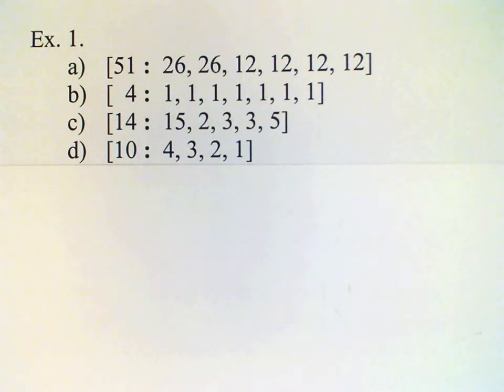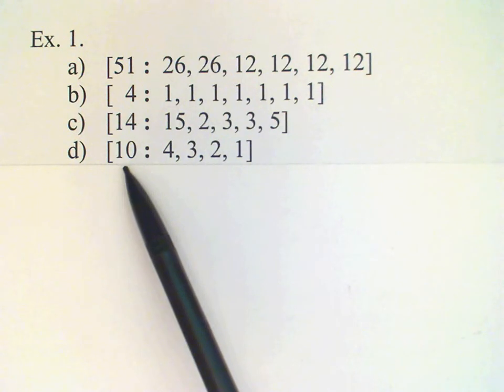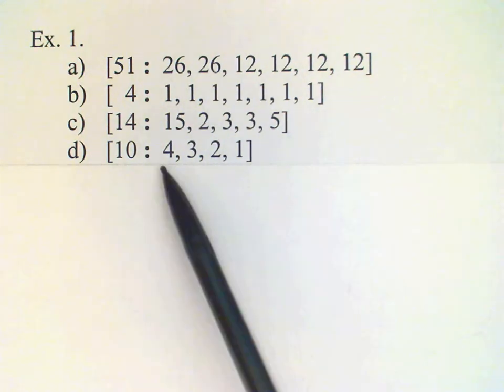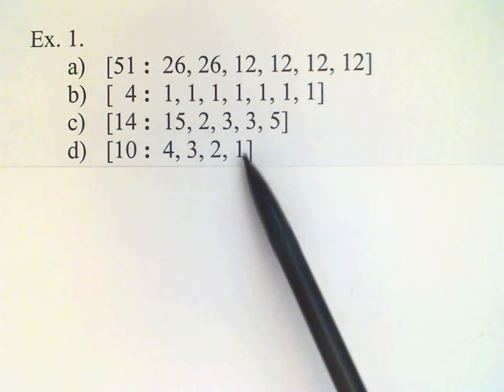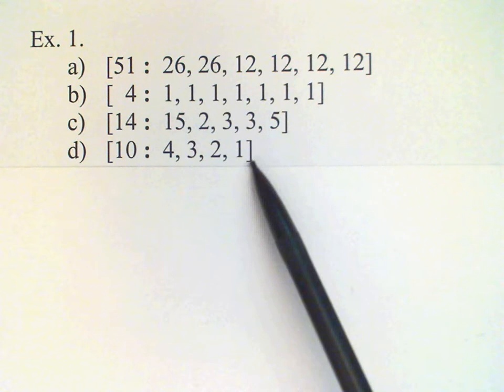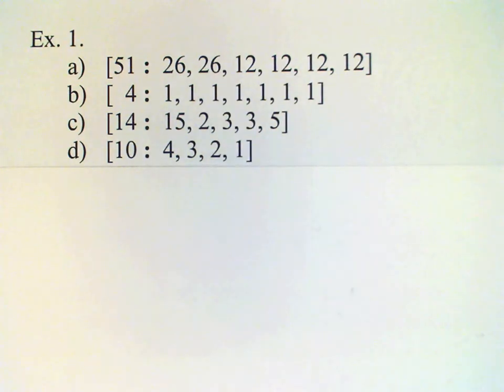Now it might seem in this example [10: 4, 3, 2, 1] that the voters have unequal power, but in fact, if you look at the quota, you see that all four of the voters need to agree, or a resolution cannot pass. So in fact, this voter here with only one vote has exactly as much power as the voter with four votes.